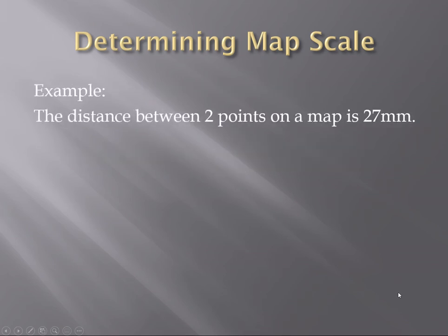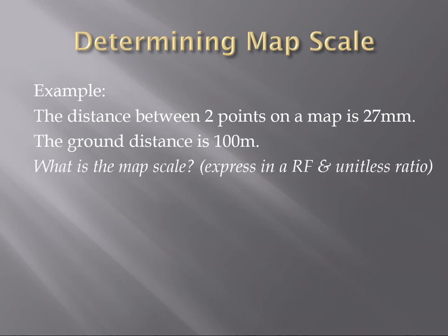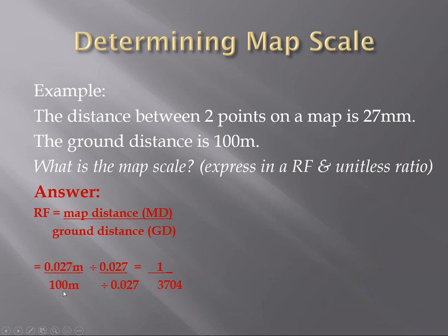So for example the distance between two points and it's the same two points on the map is 27 millimeters. The distance between those same points is 100 meters. So what is the map scale? The answer is we use our representative fraction of map distance over ground distance and we get 1 over 3704.